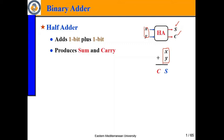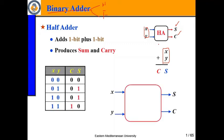Binary adders are of two types: one is the half adder and the other is the full adder. In a half adder, you add two bits and the result produces a sum bit and a carry bit.